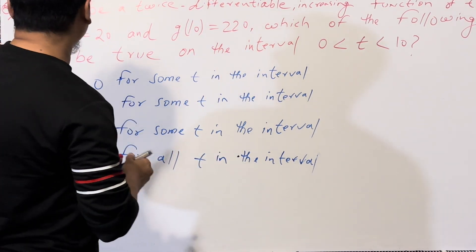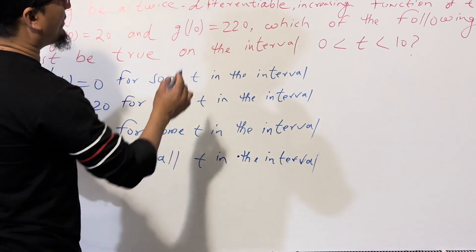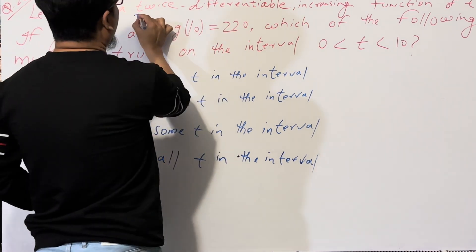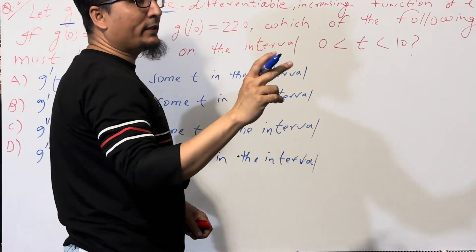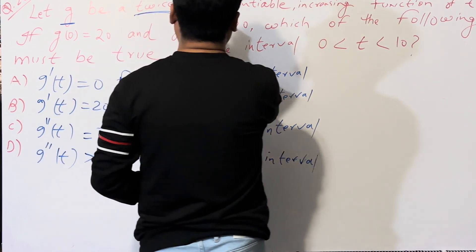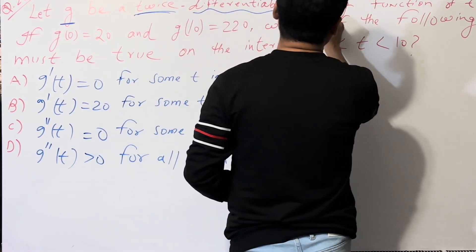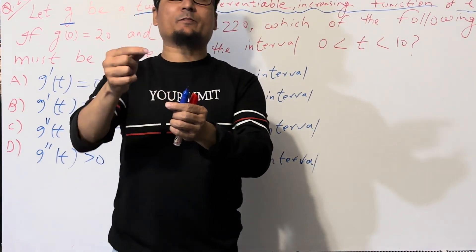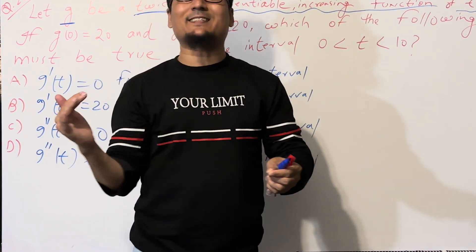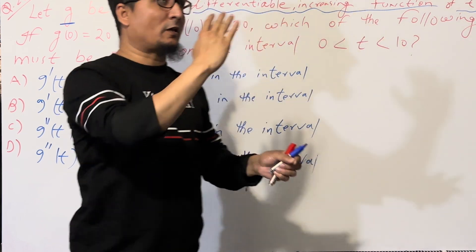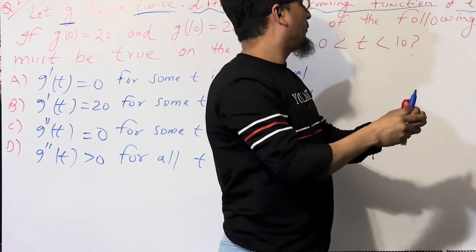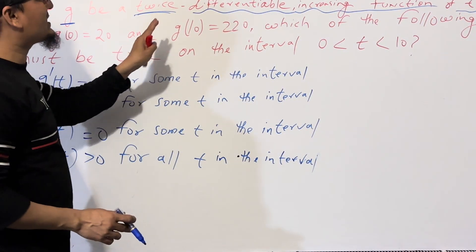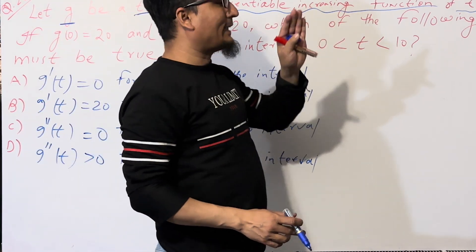The question states: let G be a twice-differentiable increasing function. This means you can find the double derivative - you have a function that is differentiable and increasing. It is a function of T, meaning we have a function in terms of T that you can differentiate two times, and the function is continuously increasing.